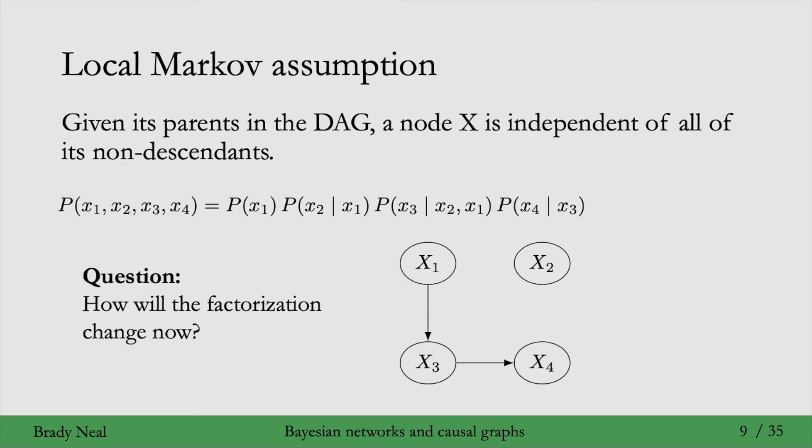The answer is that now that x2 doesn't have x1 as a parent, it will no longer condition on x1. So that factor P of x2 given x1 will just become P of x2. And similarly, x2 is no longer a parent of x3, so the factor for x3 will no longer have x2 behind the conditioning bar. So here is the simplification.